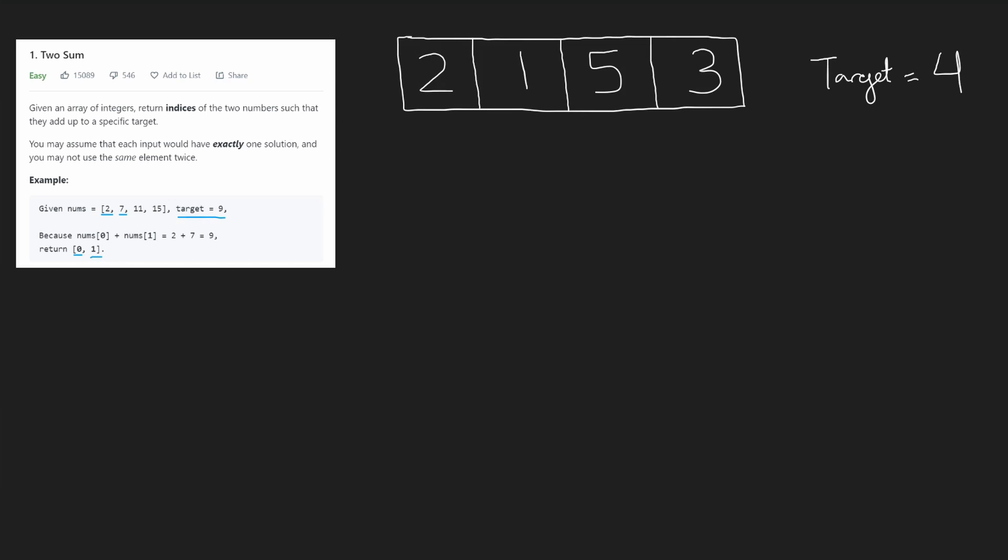We're guaranteed that there's exactly one solution, so we don't have to worry about not finding a solution and we don't have to worry about multiple solutions. Now the most intuitive way to solve this problem is basically just check every combination of two values and see if they can sum up to our target.